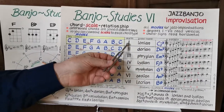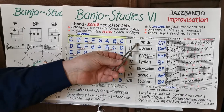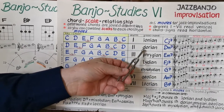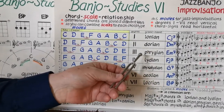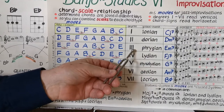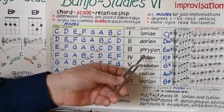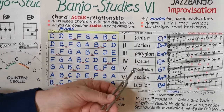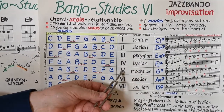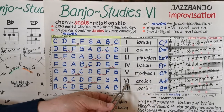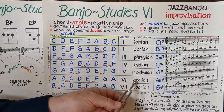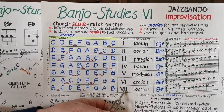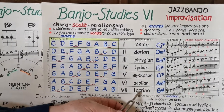On degree 1 you have Ionian. On degree 2 you have Dorian. On 3, Phrygian. On 4, Lydian. On 5, Mixolydian. On 6, the Aeolian. And on 7, the Locrian.